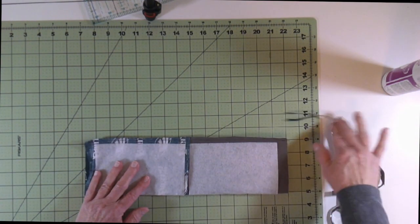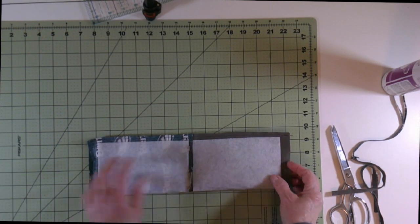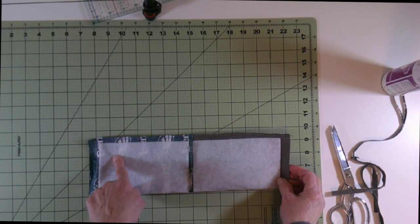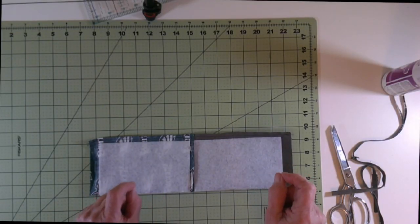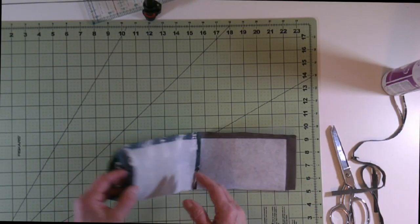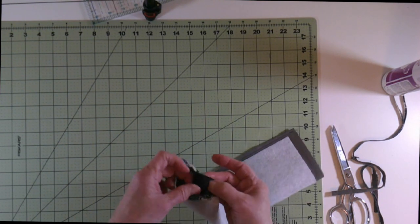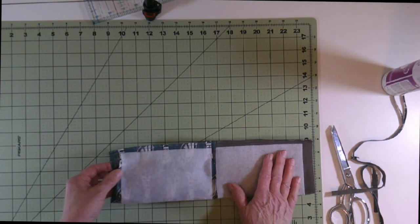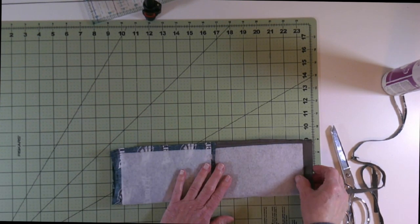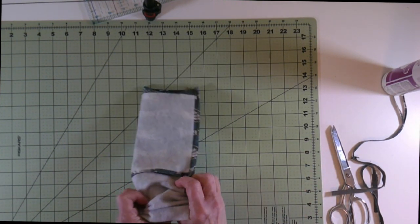Now I need to fold the inner fabric down over the outer fabric. And if you're using the same fabric for both sides, your outer fabric is going to be the one that has the elastic piece affixed to it. So we're just going to roll this down.